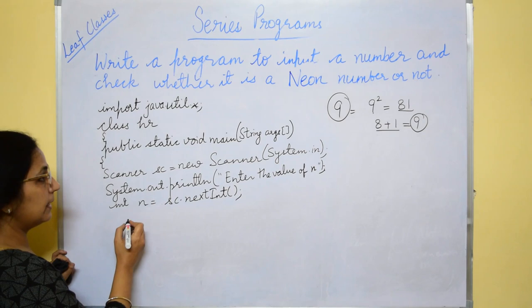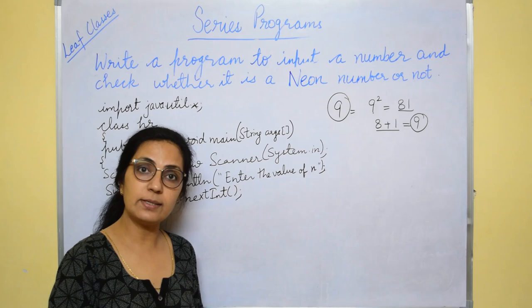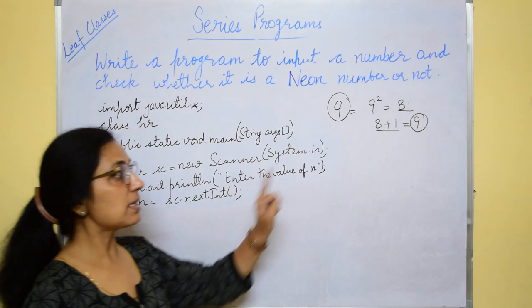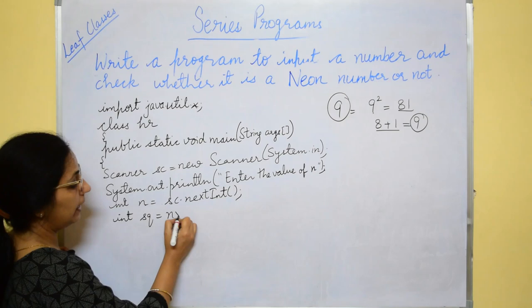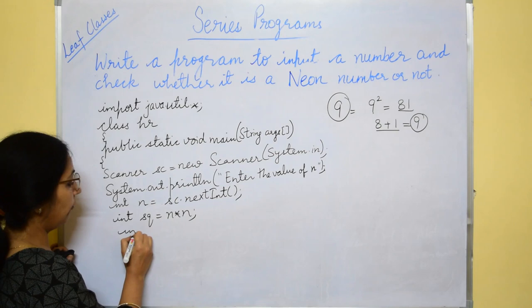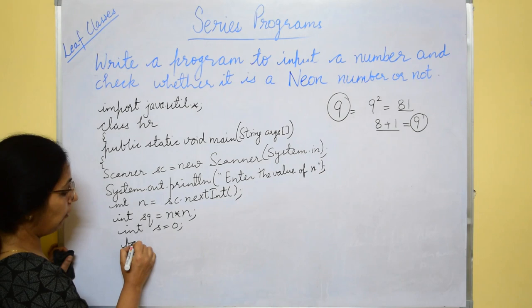Now, let's do the program. For this, just now we did in Neven also how to find the sum of the digits. Here we need sum of digits of square of the number. So, first we'll input the number and then we'll find the square value of n as sq equals to n into n. And, for finding the sum, let's take the variable s equals to 0.